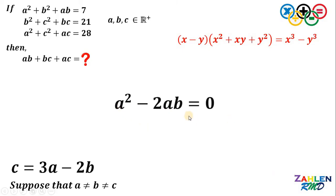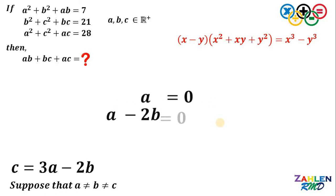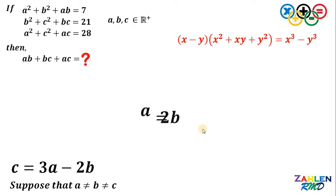Since a is common, let's factor out a. Since the expression equals 0, at least one factor must equal 0: either a equals 0 or a minus 2b equals 0. But recall that a, b, and c are in the set of positive real numbers, so a cannot equal 0. Therefore, the only possible answer is a must equal 2b. Let's set aside this result.